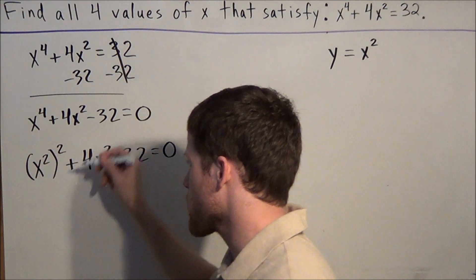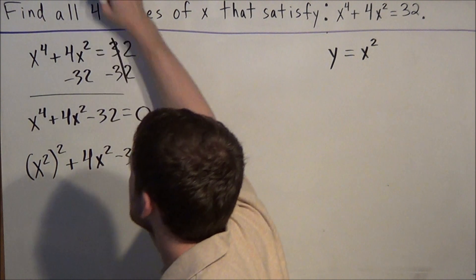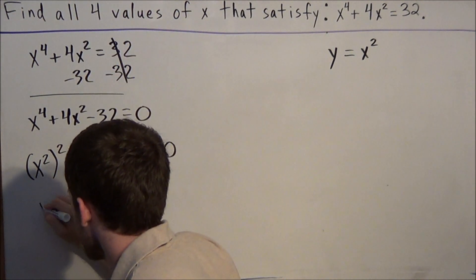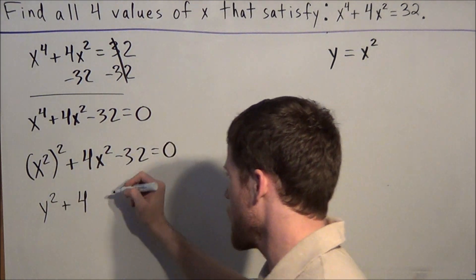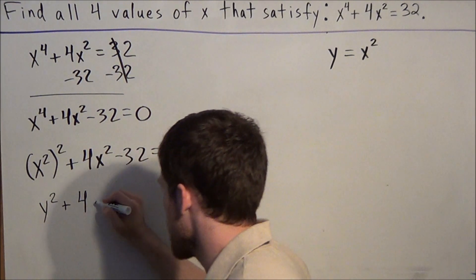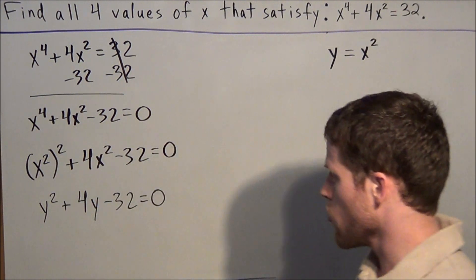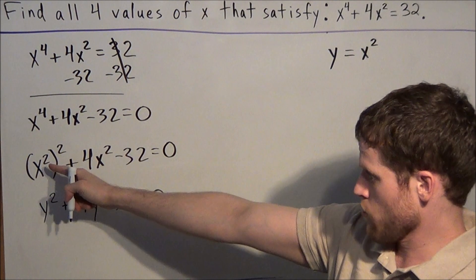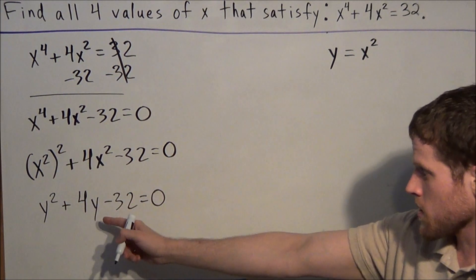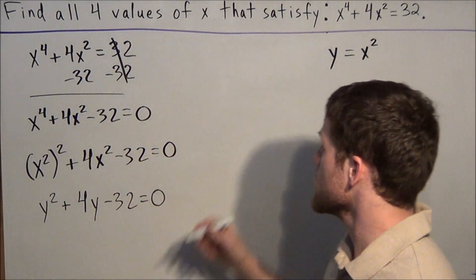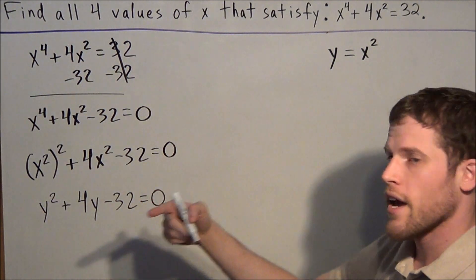So instead of x squared squared, we're going to have y squared. We're going to have y squared plus 4, and instead of x squared we're replacing it with y again, minus 32 equals zero. All we did was replace these two x squared terms with the variable y — we made a substitution. Now if you look at this, we have a quadratic equation and we know how to factor quadratic equations using our add-multiply trick.